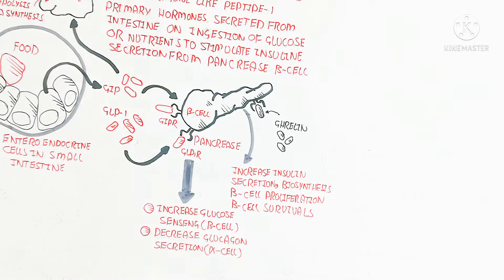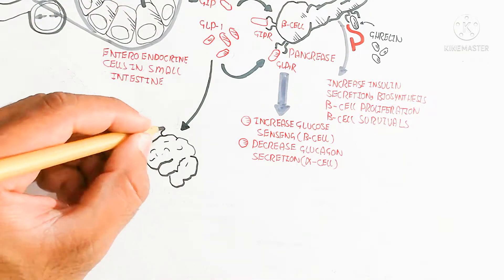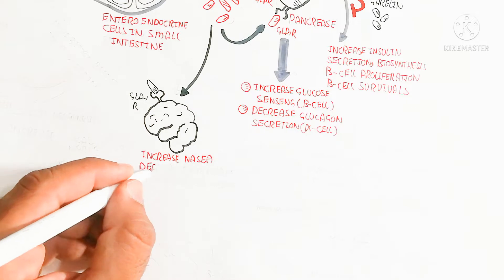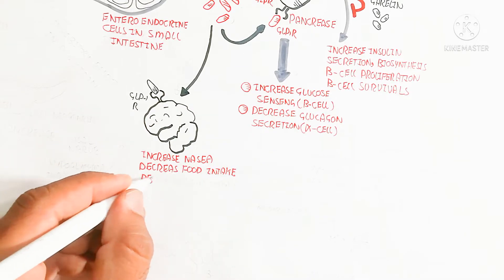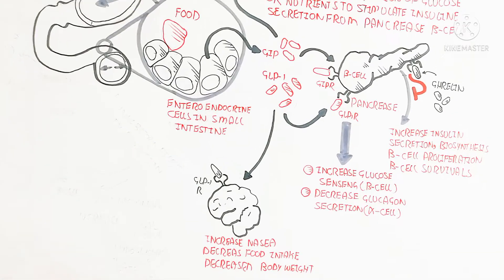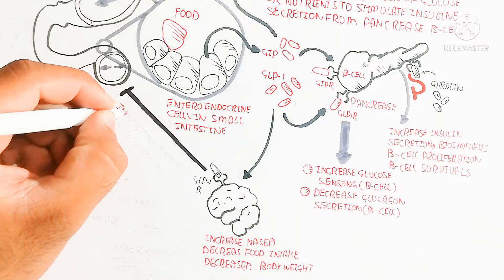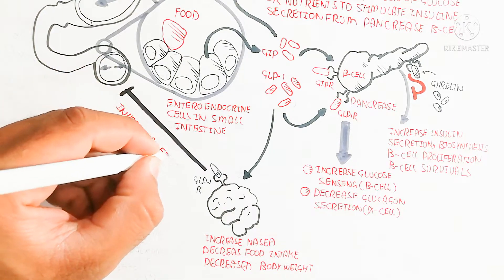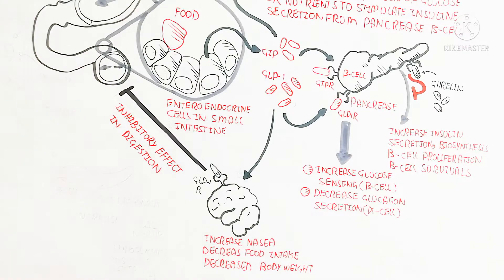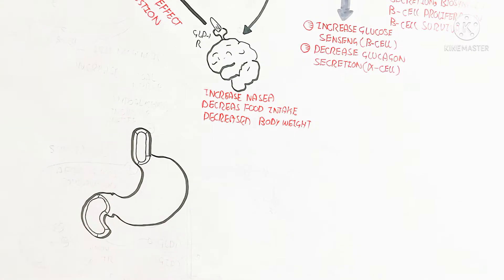Ghrelin is released from the digestive system and can bind with the pancreas. When ghrelin binds with the pancreas, it leads to inhibition of appetite. GLP-1 targets the brain and increases nausea, decreases food intake, and decreases body weight. The GLP-1 receptor binds with the brain and produces an inhibitory effect on digestion, so digestion is inhibited by this activity.